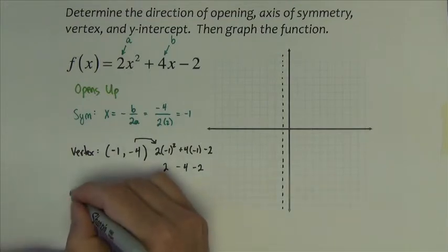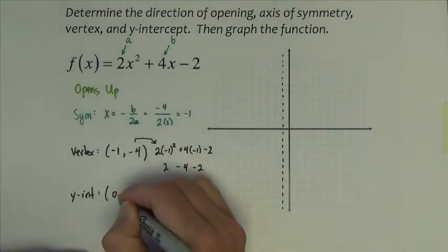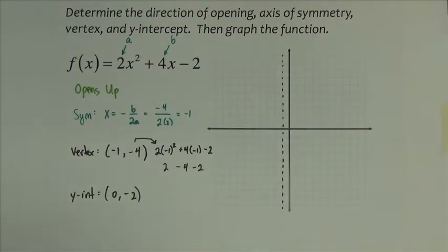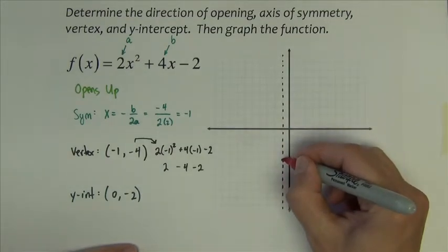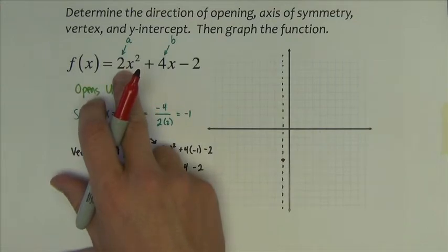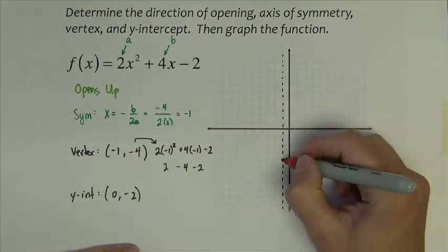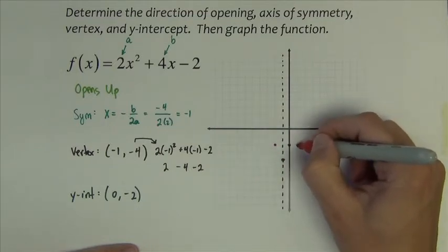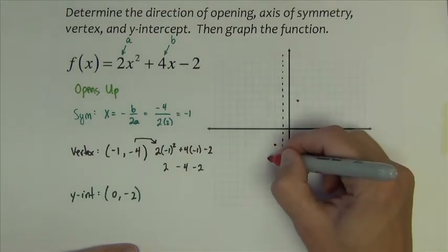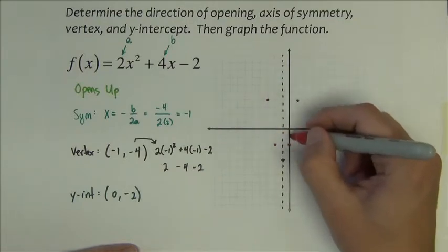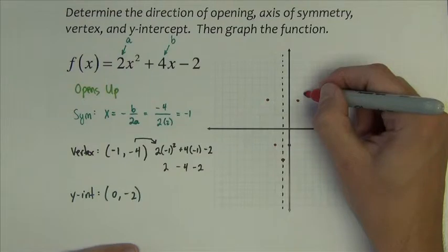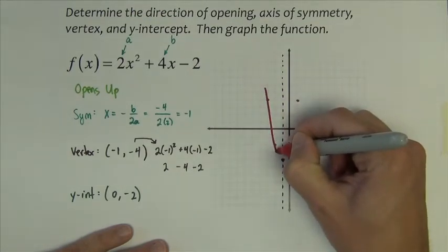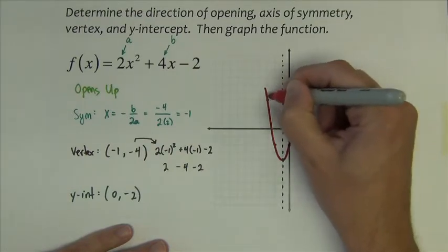The y value of the vertex: I plug in negative 1 to get 2 times negative 1 squared plus 4 times negative 1 minus 2, which becomes 2 minus 4 minus 2, giving negative 4. And lastly, the y-intercept should be 0 comma negative 2. Sketching the graph, we start at negative 1, negative 4. This graph goes up. Notice the 2 in front of x squared means it stretches vertically by a factor of 2, so instead of going 1,1 we double to get 1,2; instead of 2,4 we double to get 2,8. We stop with these five points.